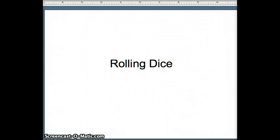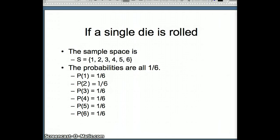In this presentation, we'll look at the probabilities obtained by rolling dice. So our first example is if a single die is rolled. If that's the case, the only possible outcomes are 1, 2, 3, 4, 5, and 6.